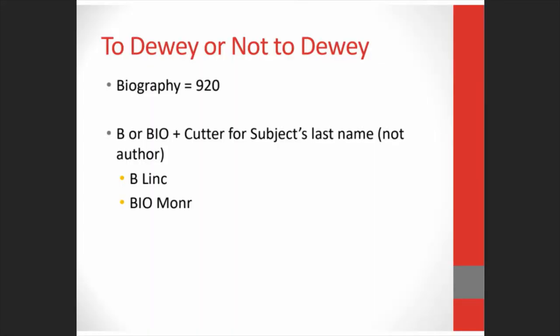Biographies should go under the 920s, which creates a couple of problems. First, the numbers differentiating people would get huge. Also, 920 puts biographies in between geography and history on the shelf, which is really not a great place for browsing. So you might actually see a B or BIO with the first few letters of the subject's last name, not the author of the book.